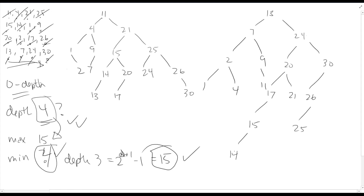Now we've got depth zero, one, two, three, four, five. Not so great doing it in this other order. We got the minimum last time, and our depth this time is five — not much worse. Remember, the worst we could have done was 15.